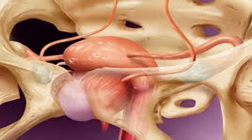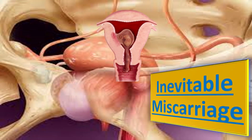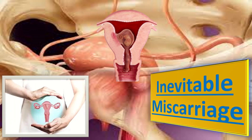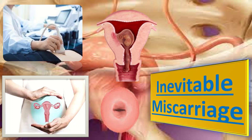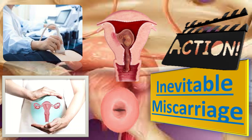Now let us explain inevitable miscarriage. In this type, vaginal bleeding is present and pain may or may not be present. On per speculum examination, the os is open. On ultrasound, the gestational sac is usually present; the yolk sac, fetal pole, and cardiac activity may or may not be present. We need to explain the diagnosis and the options of expectant, medical, or surgical management.